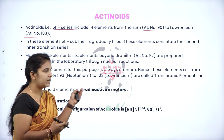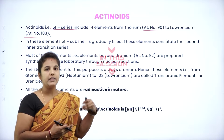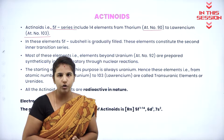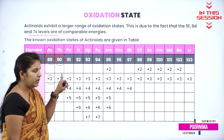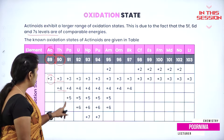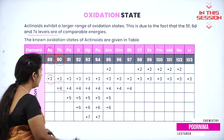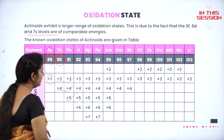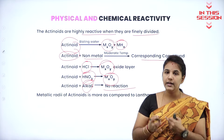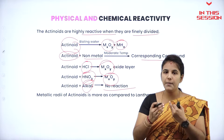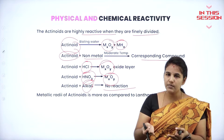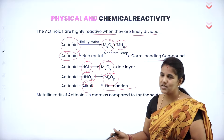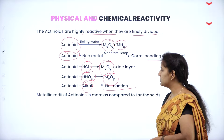The first element is actinide and the last element is lawrencium. The atomic number 91 has three oxidation states: plus 3, plus 4, and plus 5. Once it reacts with acid, it can give rise to the metal oxide. Once it reacts with a base, no reaction is observed.